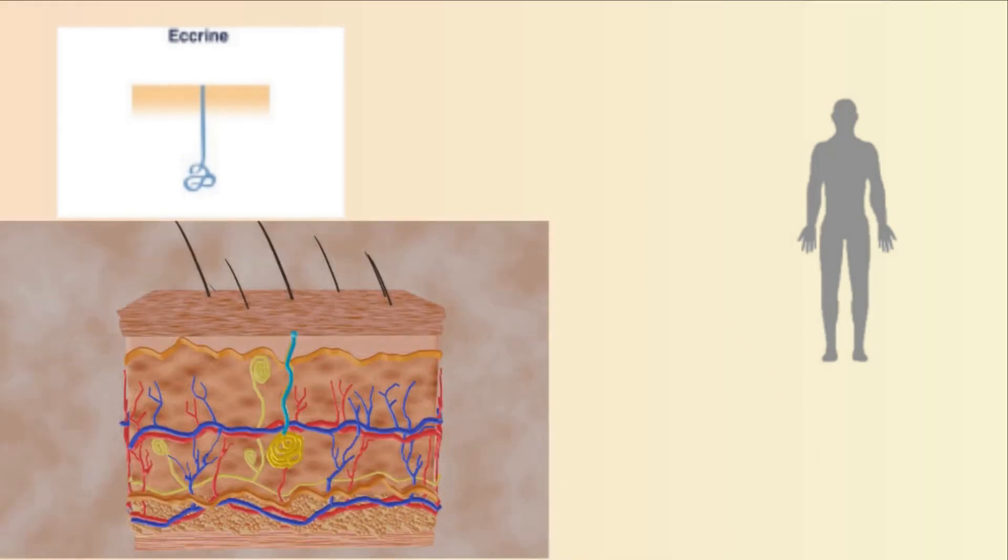Eccrine glands are the true sweat glands. Found over the entire body, these glands regulate body temperature by bringing water via the pores to the surface of the skin, where it evaporates and reduces skin temperature.